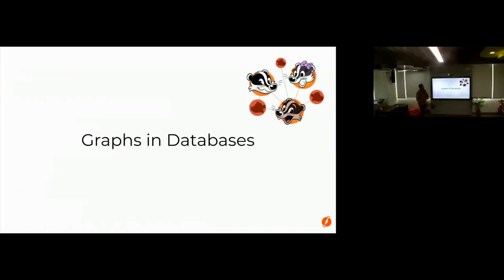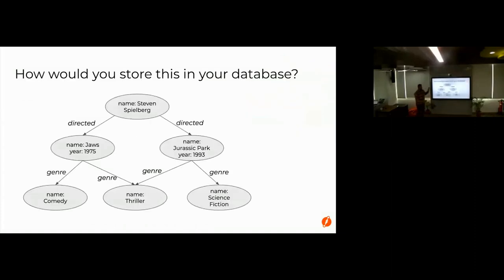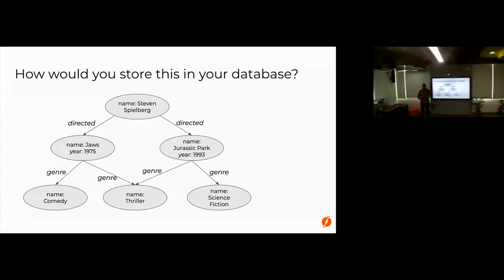So if you have this graph data and I tell you to store it in your favorite database, how would you do it? If it's a relational database, you'd probably have a table for director, a table for movie, a table for genre. But for relations, there's no direct concept — relational databases don't have a built-in way to hold relations, which is kind of weird. They do tables, that's the only thing they do. So for one-to-one relationships you use foreign keys, and for one-to-many you can put a foreign key on one side.